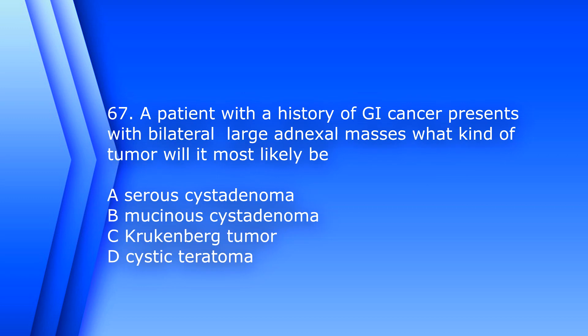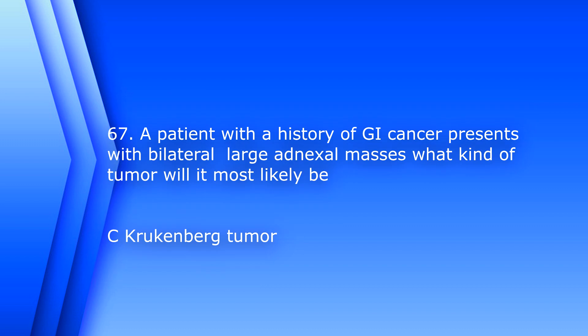Question 67. A patient with a history of GI cancer presents with bilateral large adnexal masses. What kind of tumor will it most likely be? A. Serous cyst adenoma, B. Mucinous cyst adenoma, C. Krukenberg tumor, D. Cystic teratoma. The answer is C, Krukenberg tumor.